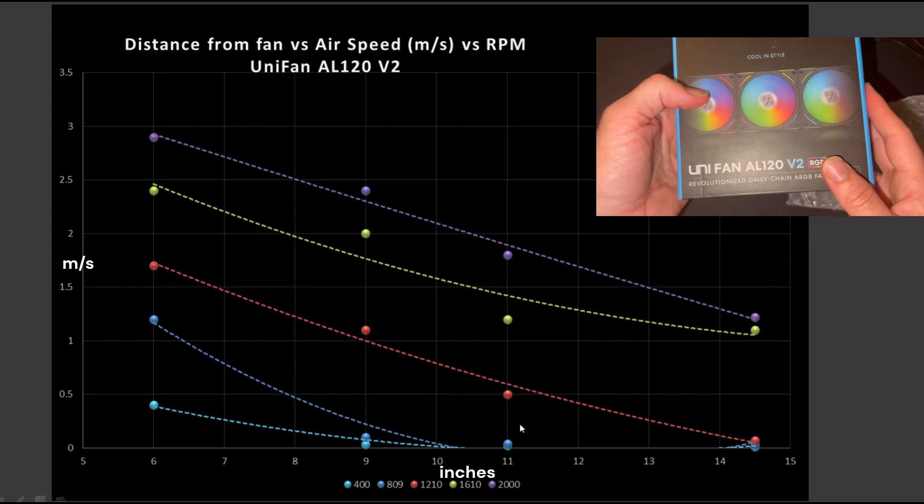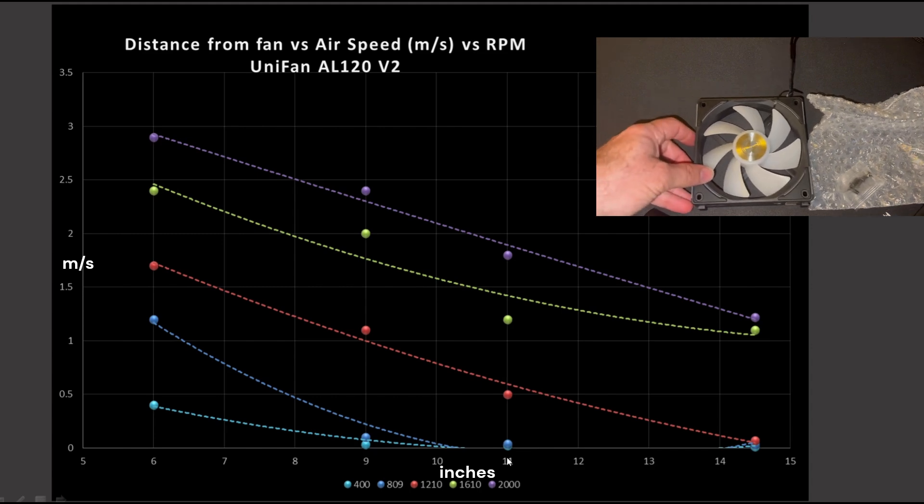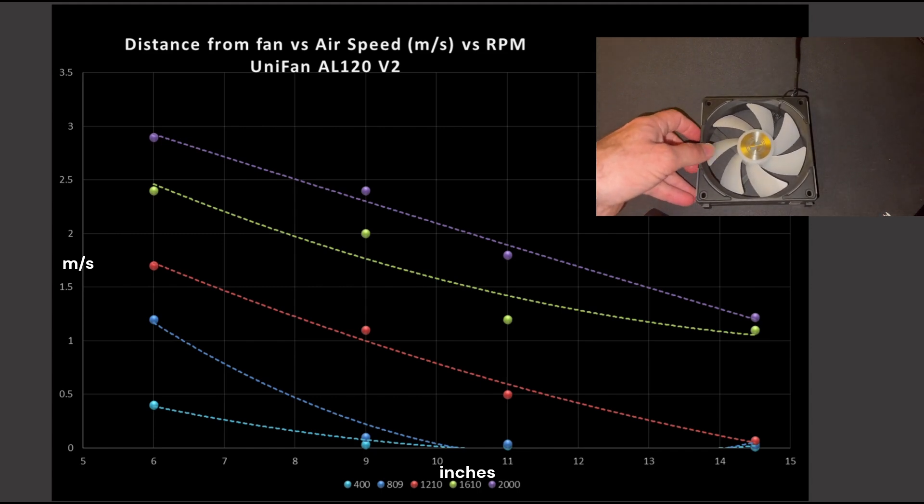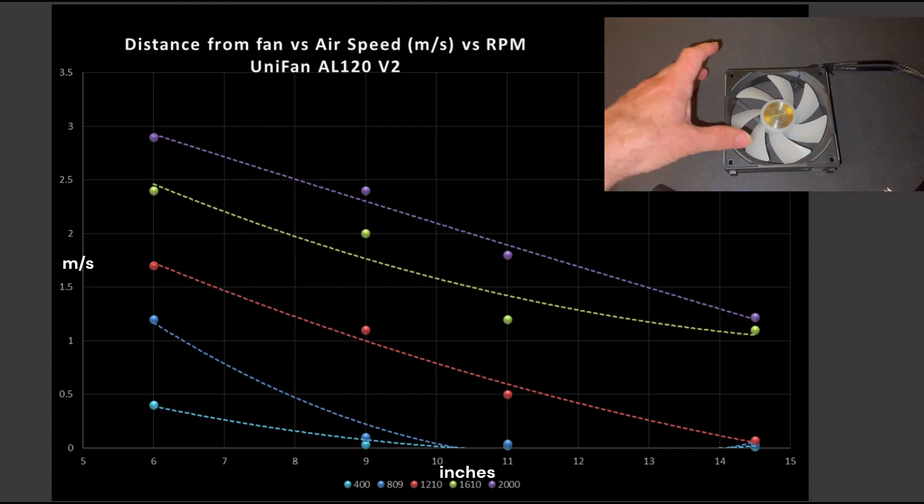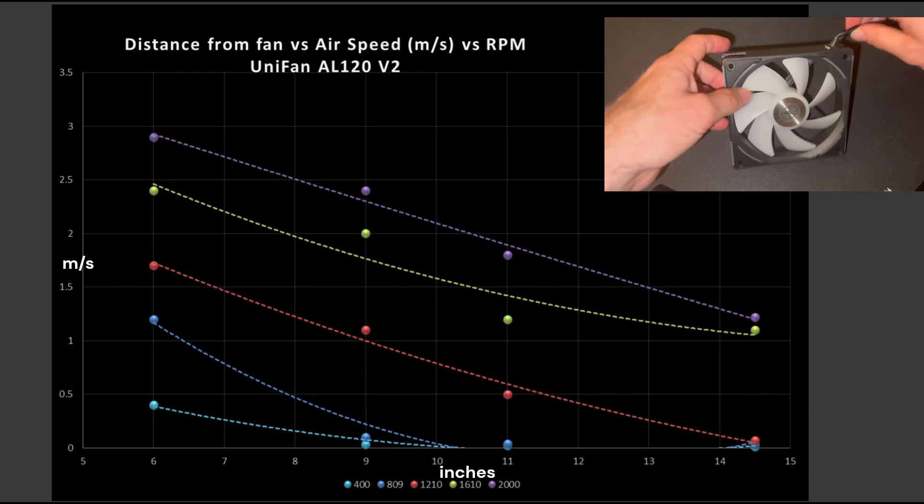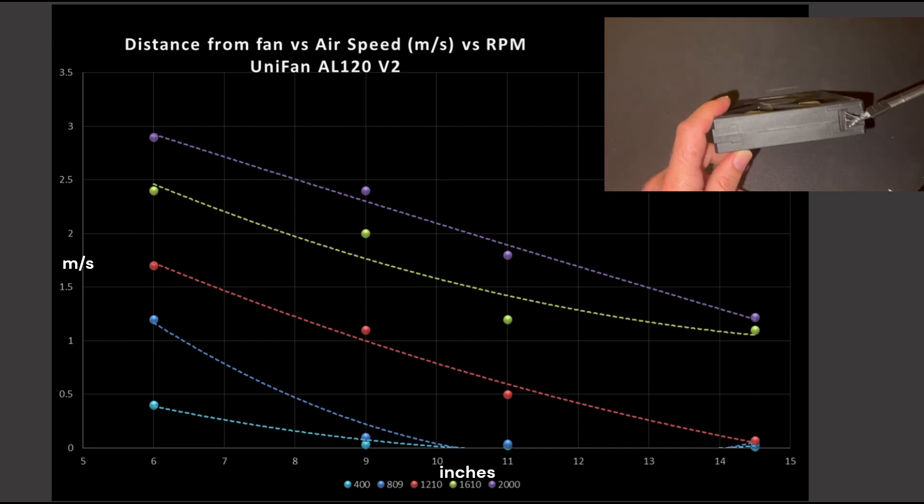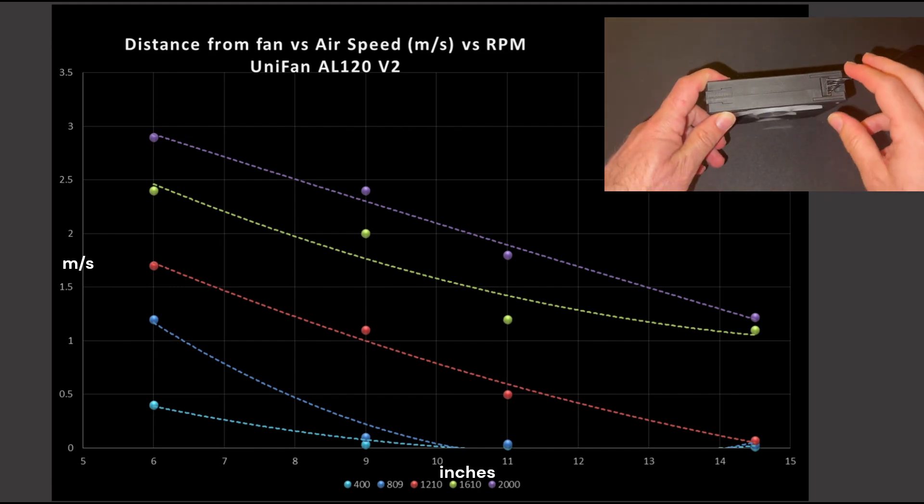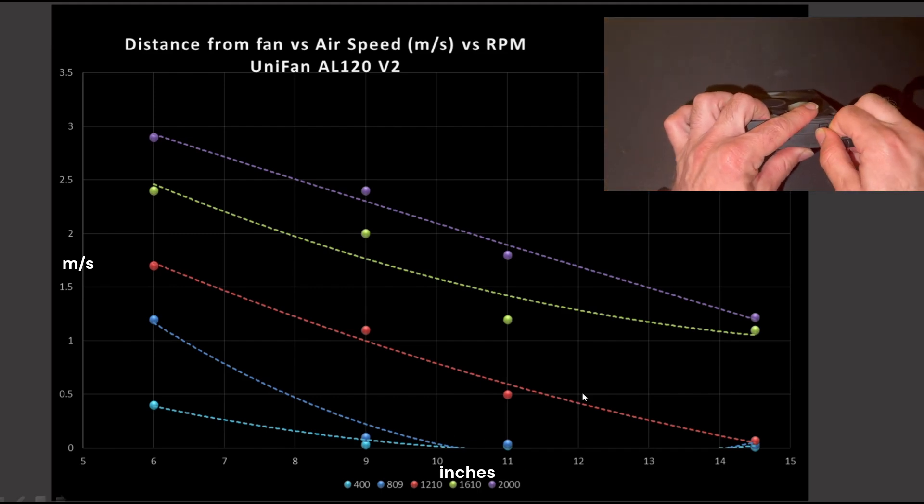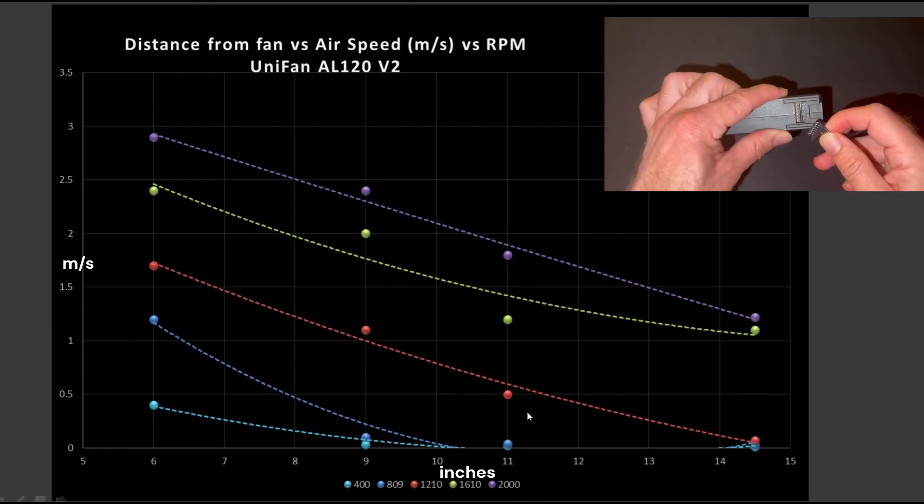Then we have the 11-inch mark. The 11-inch mark is represented by your mid-towers. Something like the Corsair 550D, Corsair 5000 series, Corsair Obsidian 500 series, the Fractal Meshify 2C, all represented by that 11-inch mark. Pretty much the most standard on the market right now.